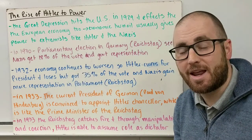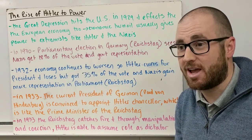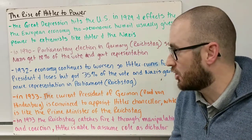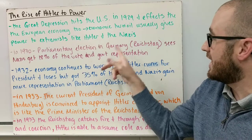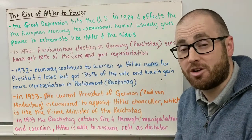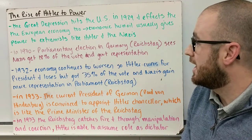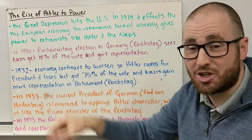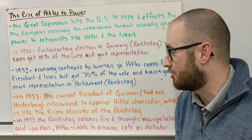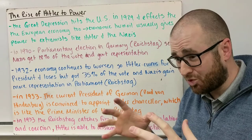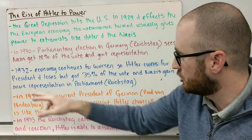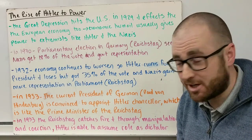In 1930, Germany had a parliamentary election — similar to our House of Representatives or Senate. The parliament in Germany is called the Reichstag. The Nazis got 18 percent of the votes, which was the first time the Nazis gained government representation. This was a big move in 1930, and you'll see how quickly Hitler was able to come to power.